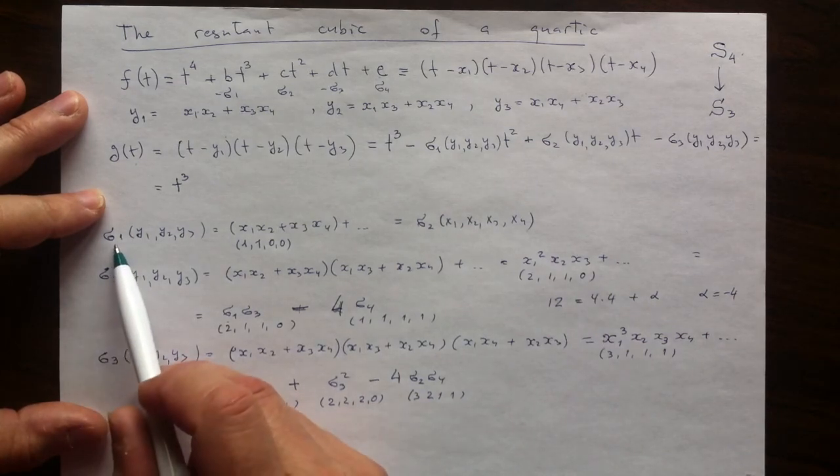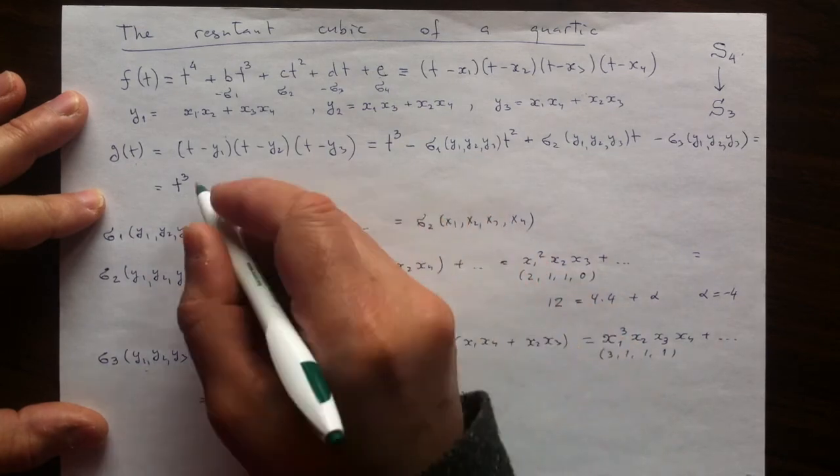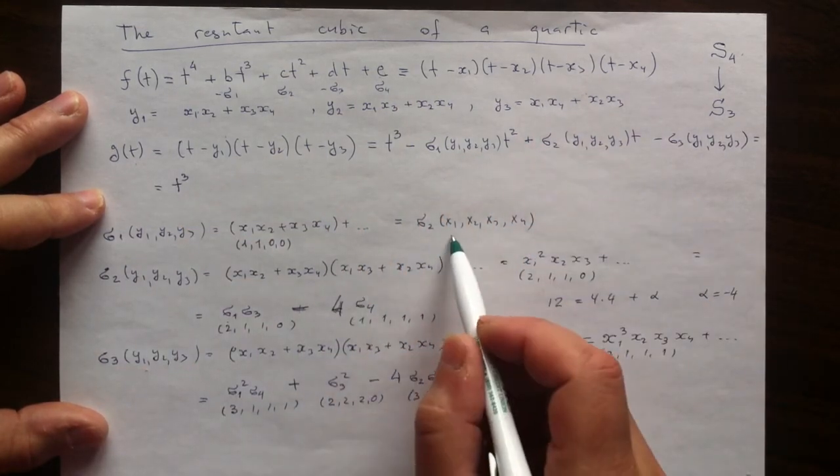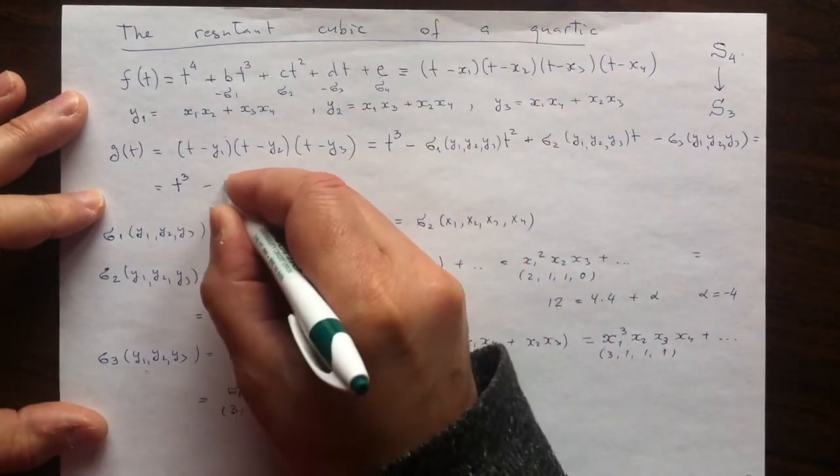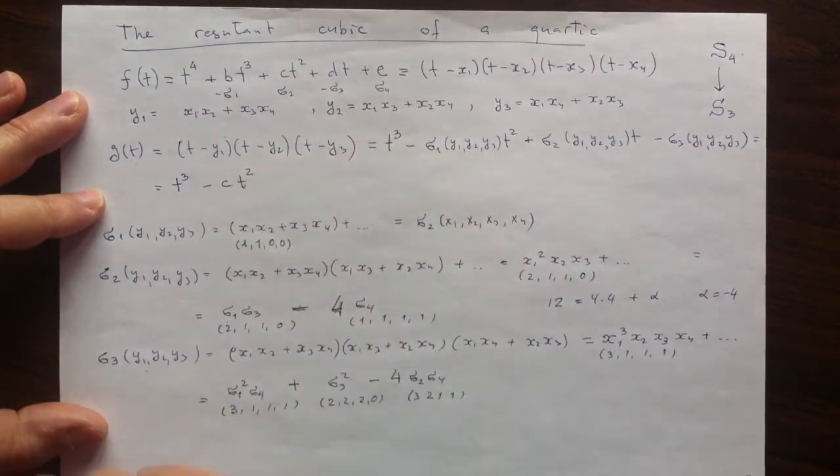Those σs I can see on the right-hand side of the expressions. So σ1 of y's, which is with negative sign, the coefficient for t squared is as good as σ2. So that is going to be negative c for t squared.